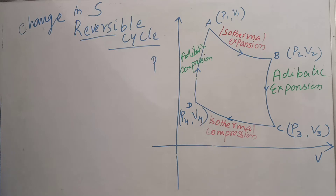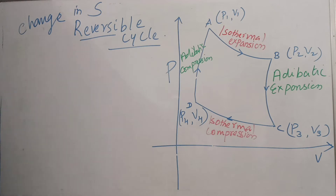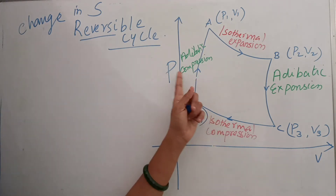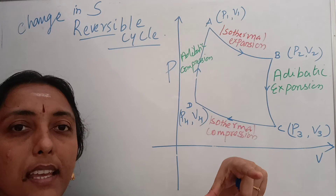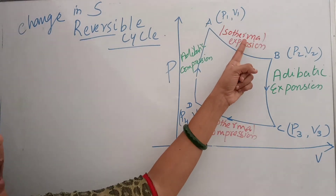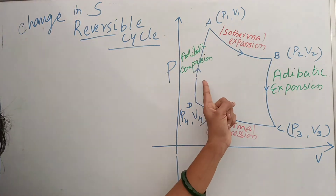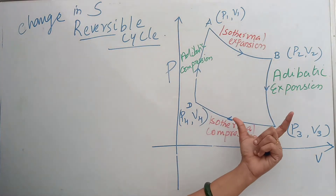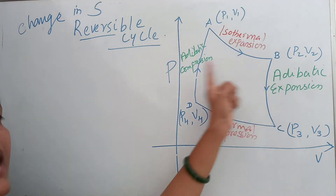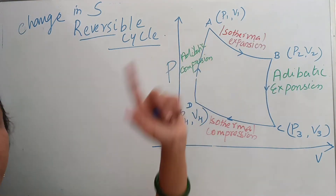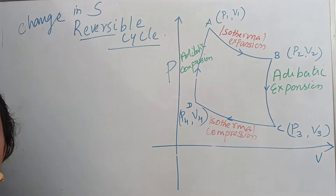According to us, the most important reversible cycle is the Carnot cycle. We have taken the help of the indicator diagram. The Carnot cycle has two isothermals and two adiabatics. In the adiabatic process, no work is done because no heat energy is either entering or leaving the system.